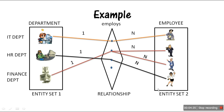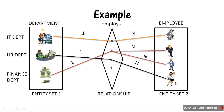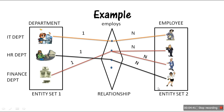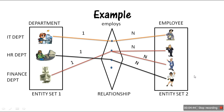To understand many-to-one, it is the same thing — you just exchange the positions. Many-to-one and one-to-many are not different; it is just a different way of saying it. Now let's learn about the final type: many-to-many cardinality ratio.